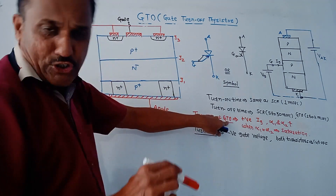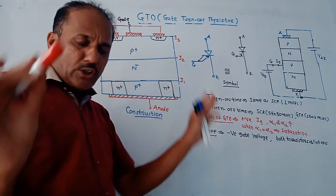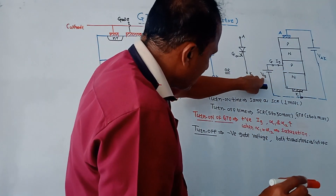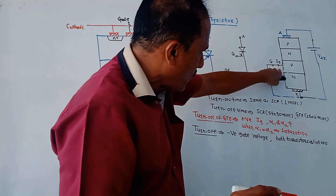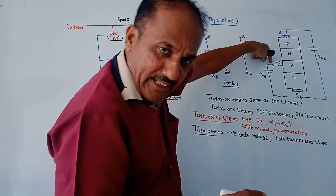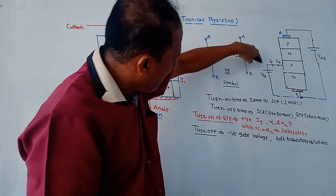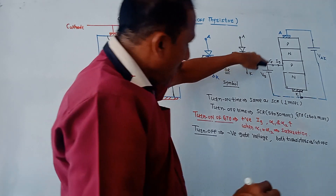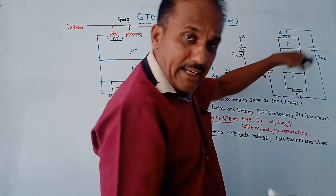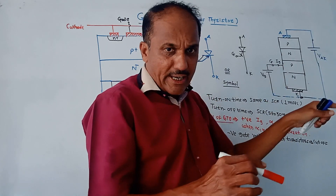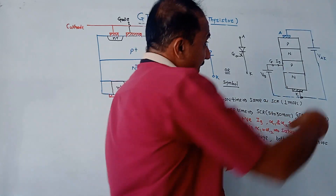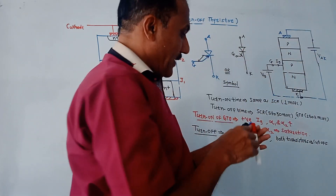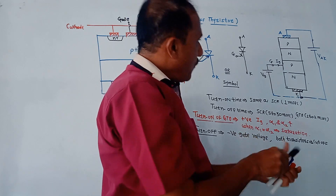The turn on mechanism of GTO is similar to that of SCR. We need to apply a certain positive gate voltage at the gate terminal. The GTO has four layers P-N-P-N, which means it can be treated as a two-transistor model.